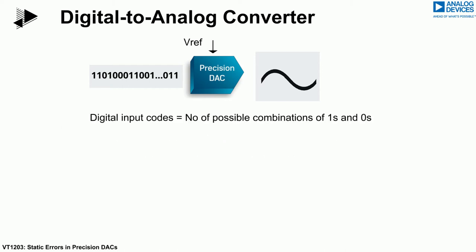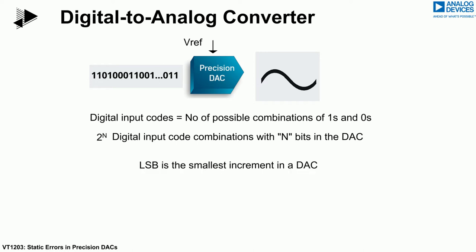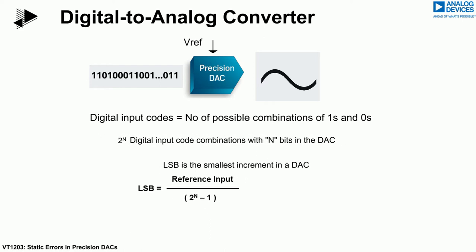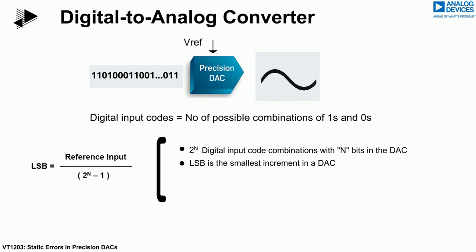The number of digital input codes of a DAC is the number of possible combinations of ones and zeros. Two to the n is the total number of possible combinations, where n represents the number of bits. The least significant bit, or LSB, is the smallest increment in a DAC. The LSB weight is calculated as the reference voltage divided by the number of digital input codes.